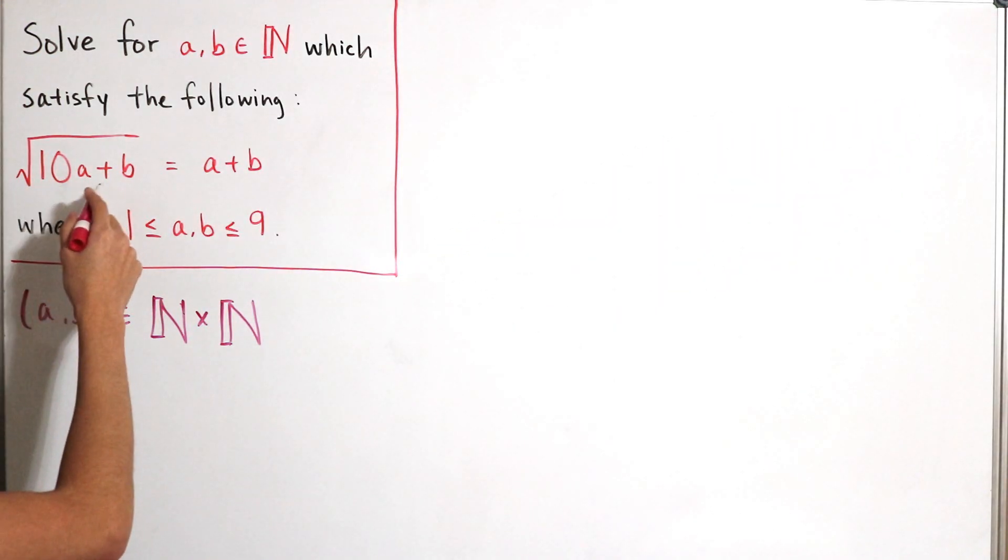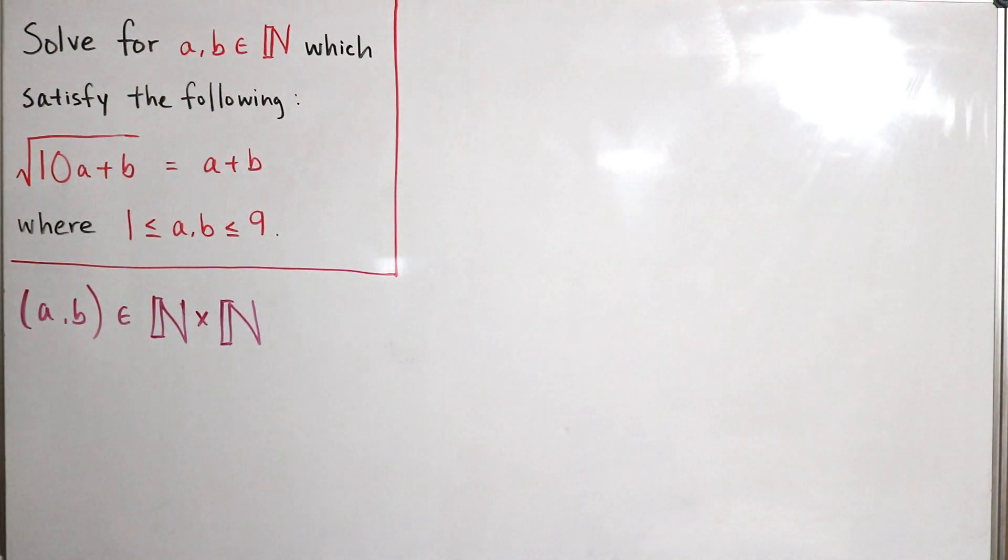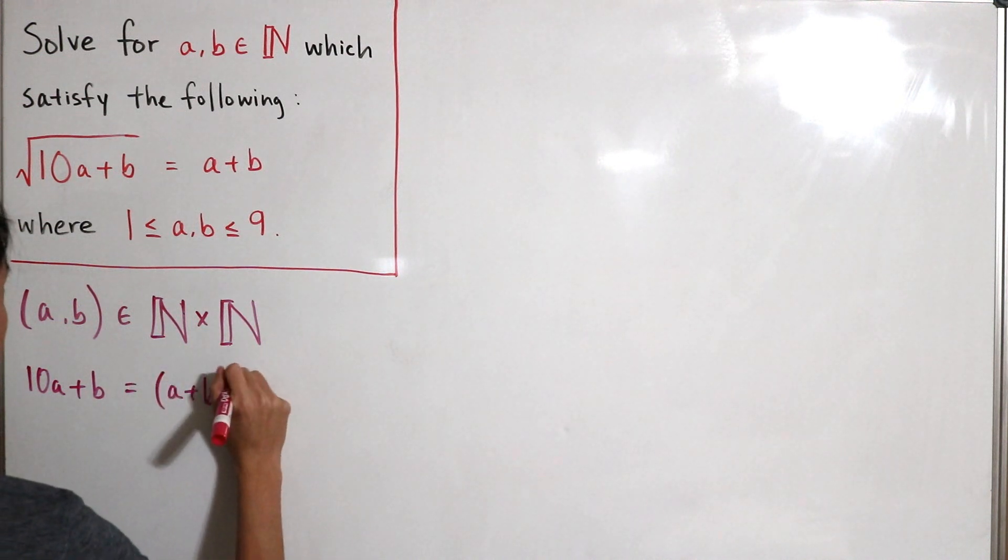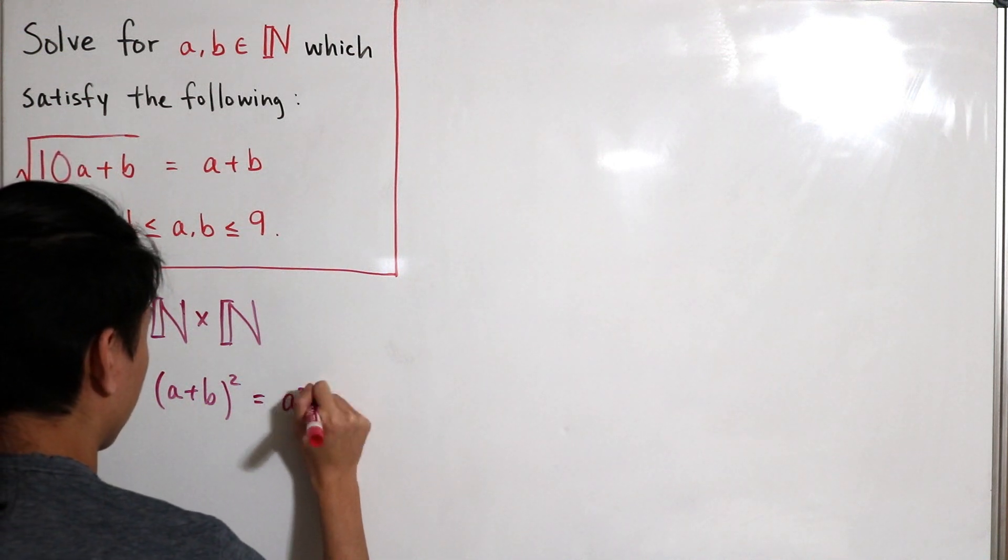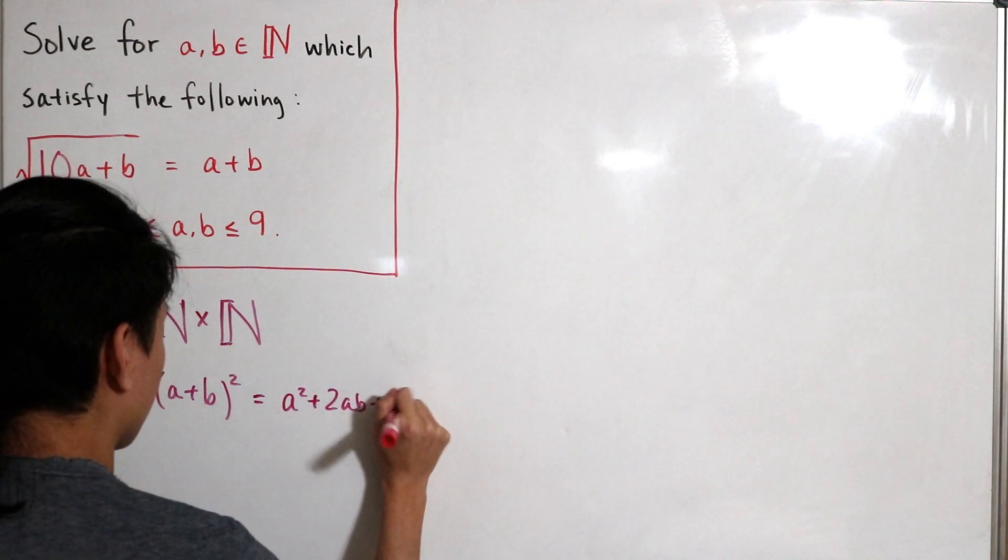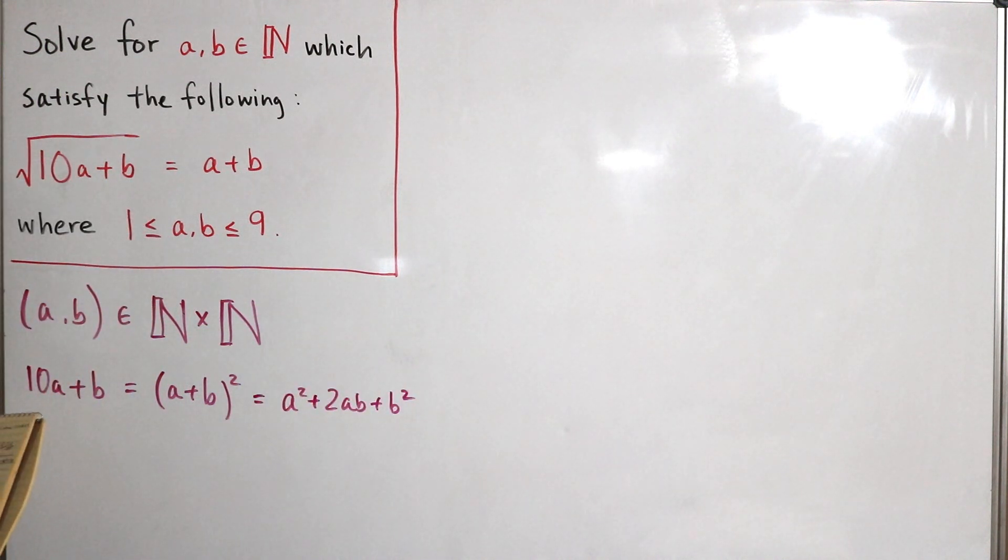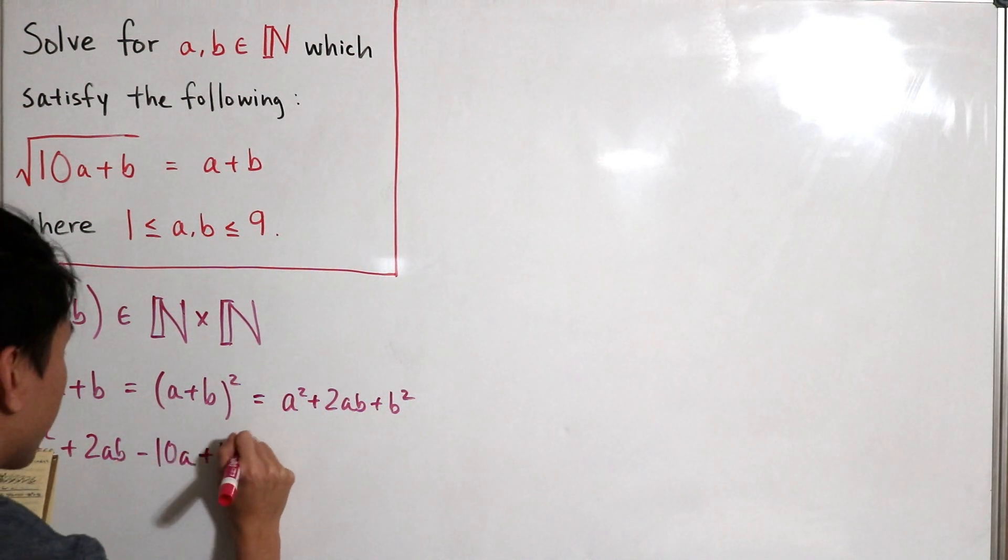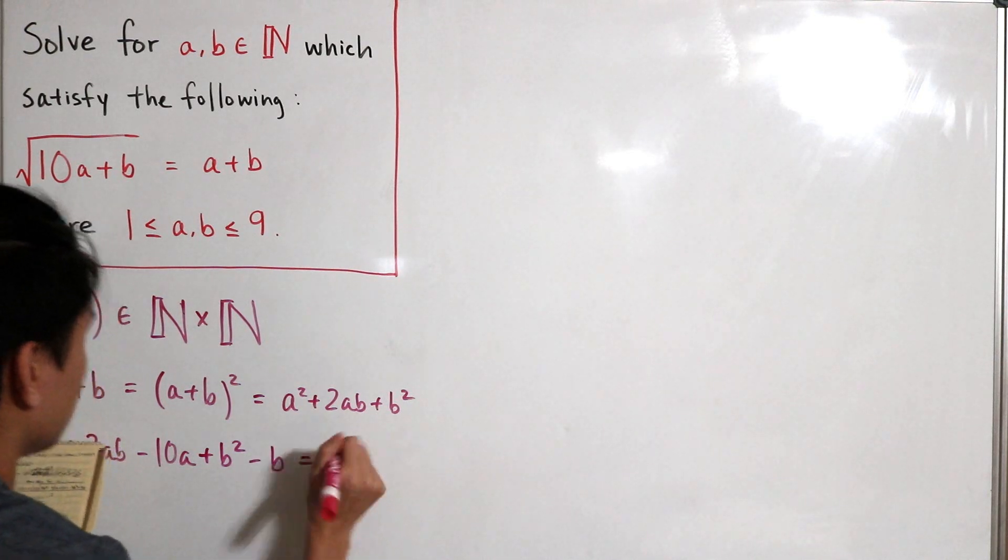All right, let's start off with square root 10a plus b. So the most obvious step we can do here is just square on both sides. So we have 10a plus b, and that's just equal to a plus b quantity squared, which of course we expand this out. Obviously you can see this is just a squared plus 2ab, then plus b squared. Then we'll subtract everything to one side and solve for zero. So we'll have a squared plus 2ab, then subtract 10a, then add this with b squared, then subtract b, which is equal to zero.